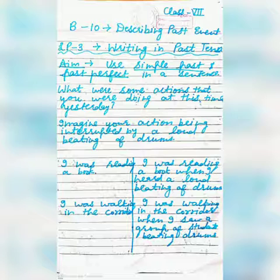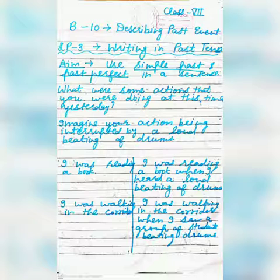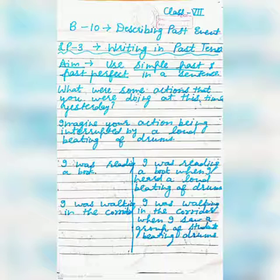Aap eck sentence mein simple past and past perfect tense ko appropriately use kar payenge. So what are some actions that you were doing at this time yesterday? Aisay koon se kaam hain jho aap is time kal kar rahe thae? And imagine your actions being interrupted by a loud beating of drums. I was reading a book when I heard a loud beating of drums. Ki mein book read kar raha tha to meinne tez tez drum ki awaaz suni. So interrupt koon se action hua — book reading wala.